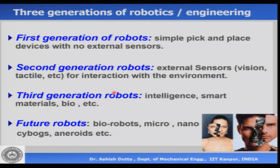From about 1990 onwards, we have third generation robots, which we sometimes call intelligent robots. They are made up of smart materials and sometimes they are biocompatible. Future robots include biorobots, robots which are living inside the body or can be a part of the body, micro and nano robots, cyborgs, and androids as in science fiction. So robotics is essentially divided into these four generations and this is where we are now.